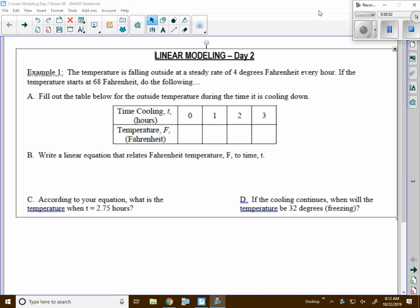All right, group. Example one today, we're going to build on our lesson from yesterday, which is day one. Example one, we have the temperature falling at a steady rate of four degrees every hour. If the temperature starts at 68, do the following. We have a table that needs to be filled in.